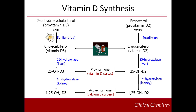The 1-alpha-hydroxylase enzyme is positively regulated, among other things, by parathyroid hormone. From the synthesis diagram, you can infer that either liver or kidney damage will affect the availability of vitamin D. Likewise, inadequate exposure to sunlight will also cause deficiency in the absence of supplementation. Supplements containing both vitamin D2 and D3 are available and will be discussed later.